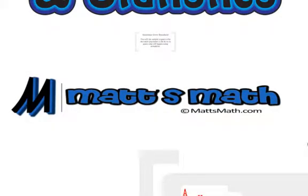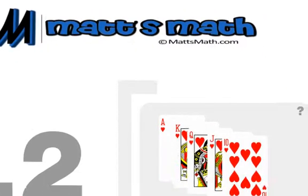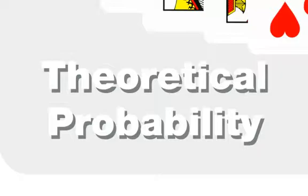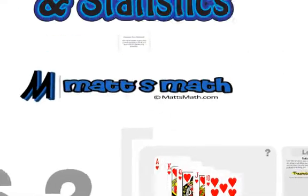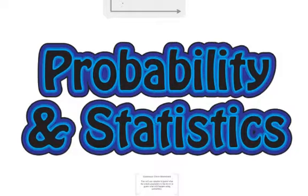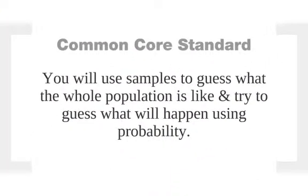Hey everybody, this is Matt with MathsMath.com. Thanks for joining us here today as we talk about theoretical probability and favorable outcomes compared to what actually happens. We are in the Common Core Standard of Probability and Statistics, and today we're going to mainly focus on guessing what will happen using probability.